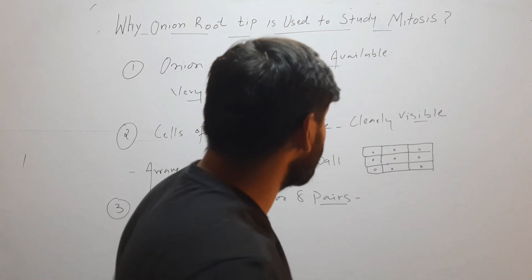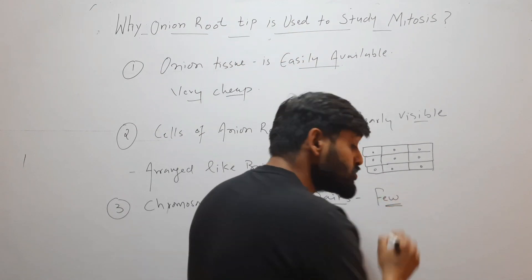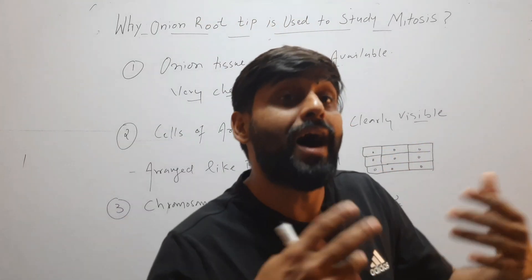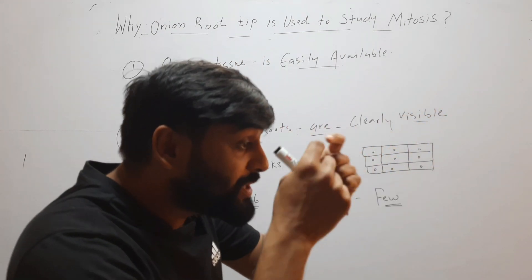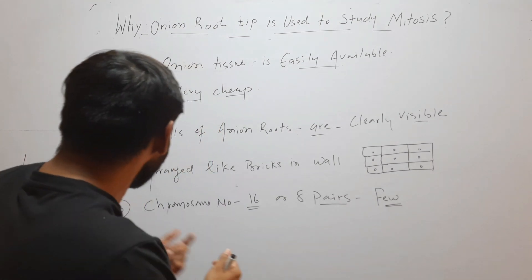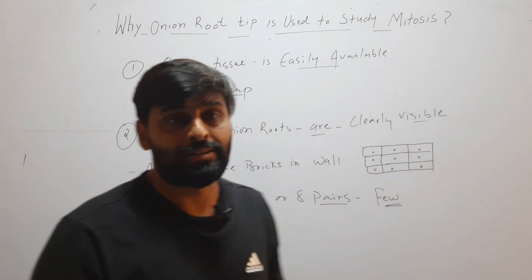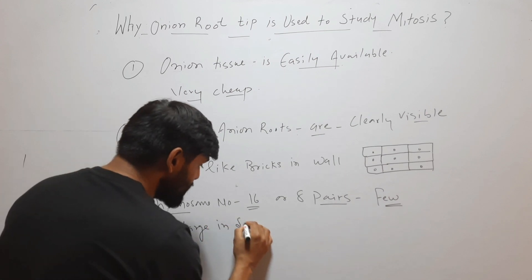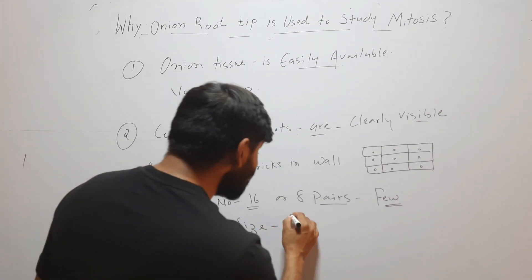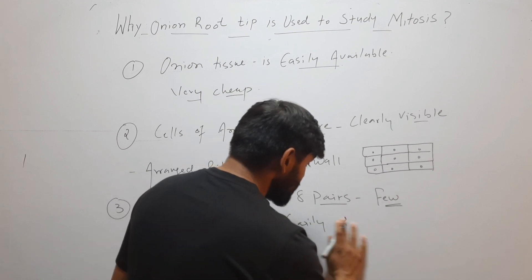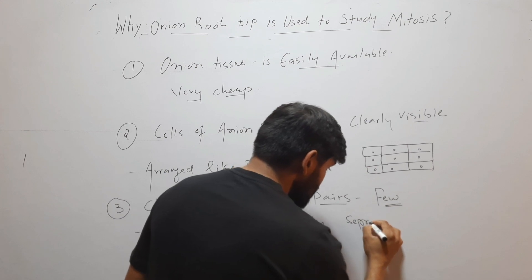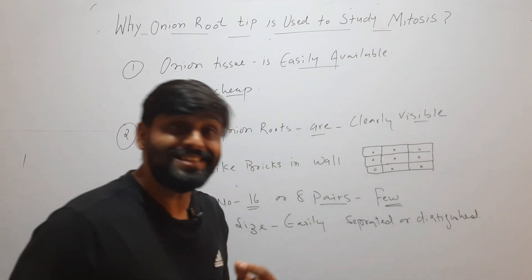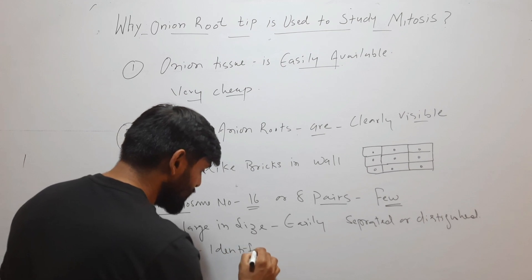The chromosome number in the case of onion is 16, or you can say eight pairs, so the chromosome number is very few. When chromosome numbers are few, they can be seen clearly. In cases where chromosome numbers are very high, chromosomes will entangle with one another and it will be difficult to identify them. In onion, chromosomes are also very large in size, so they can be easily separated, distinguished, and identified.